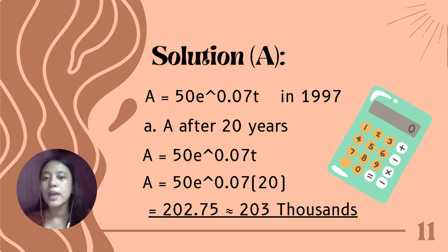Since letter A asks for A after 20 years, that's what we'll find. The time is 20 years, so we substitute that. A equals 50e raised to 0.07 times 20. We calculate this using a calculator, any kind of calculator, scientific or normal calculator. When we calculate this, the answer is 202.75 or approximately 203,000.